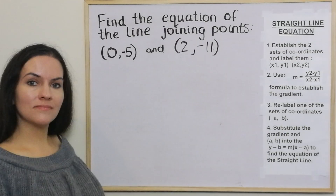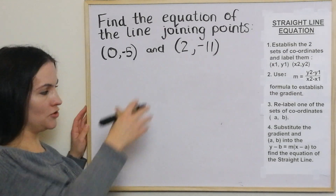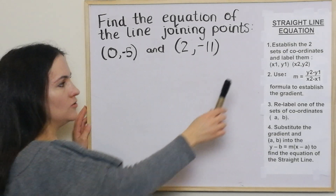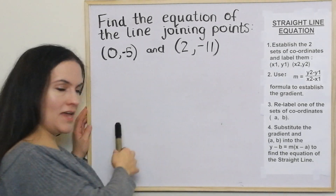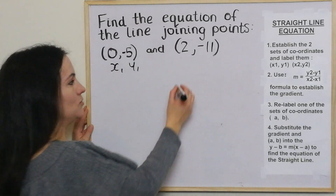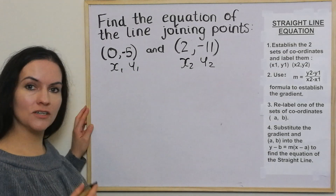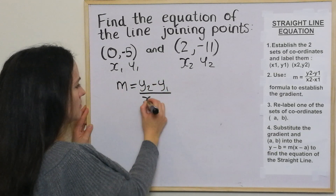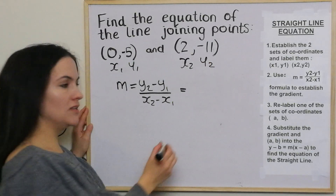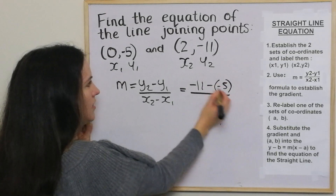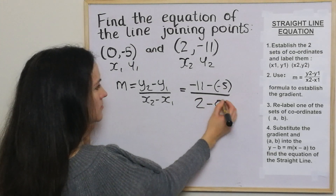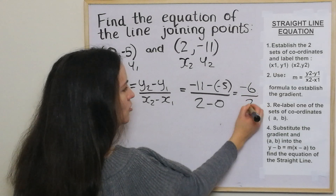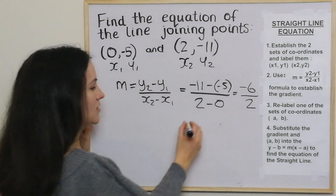This is now our third and final example. We're just going to go through the four step guide once again. We're finding the equation of the line joining the points, this time it's 0, negative 5 and 2, negative 11. Step 1 is to label them x1, y1 and x2, y2. Using the gradient formula: y2 is negative 11, take away negative 5, over 2 take away 0. Negative 11 take away negative 5 becomes plus 5, giving negative 6, over positive 2. Negative 6 divided by 2 is negative 3, so the gradient is negative 3.